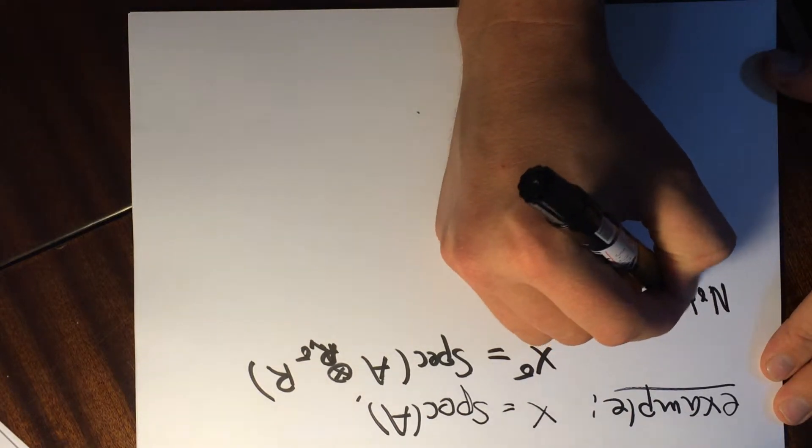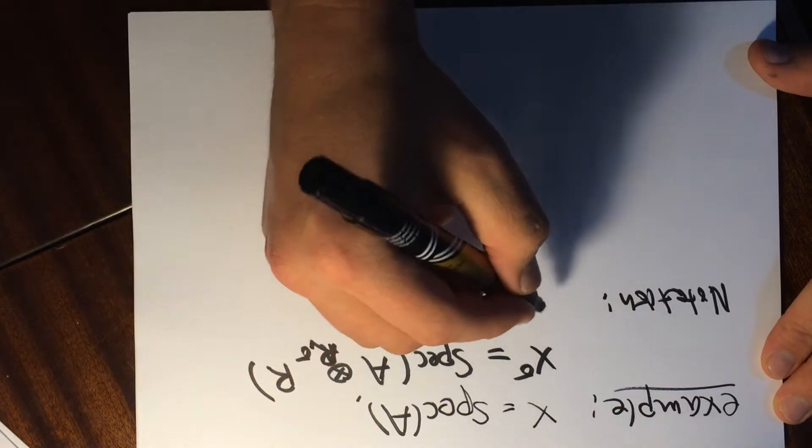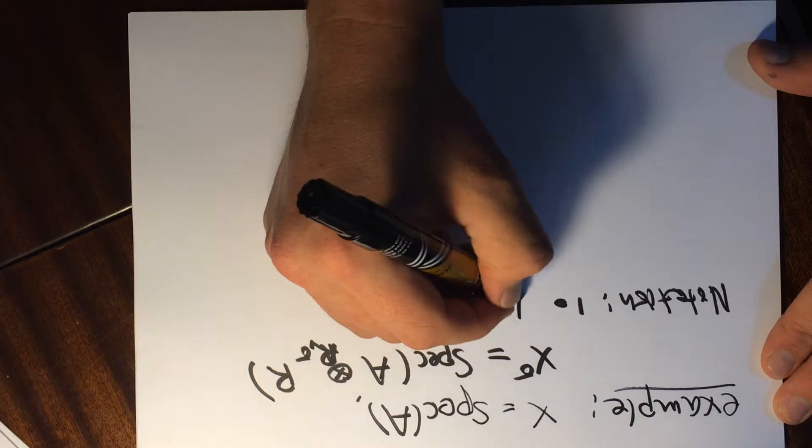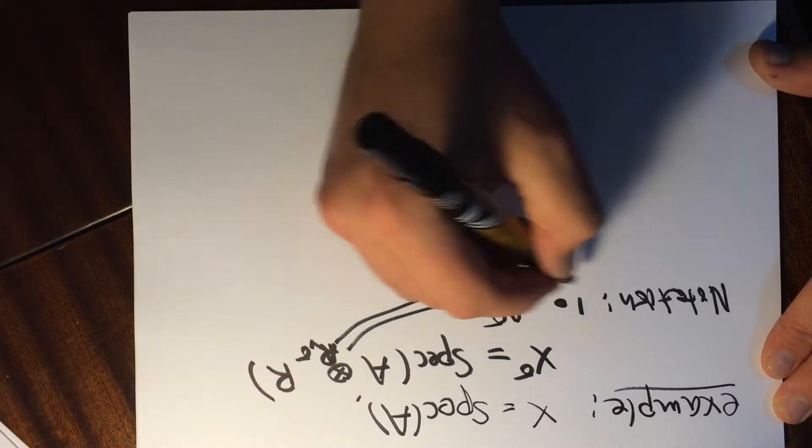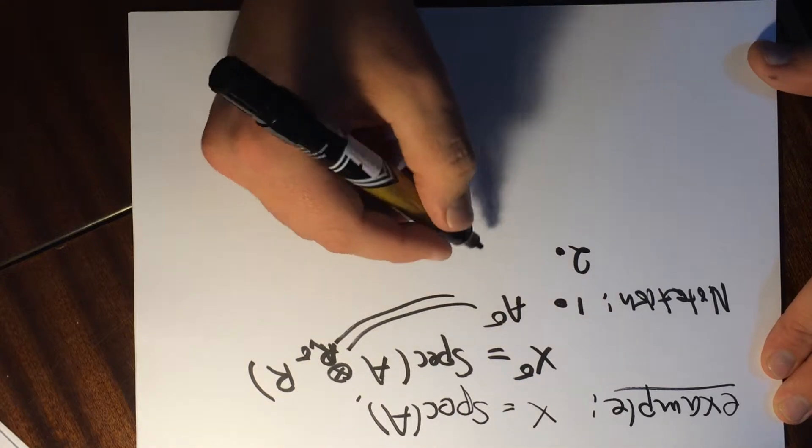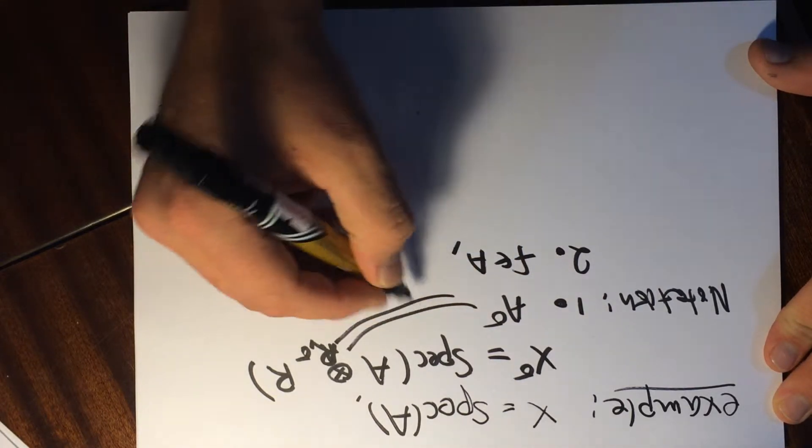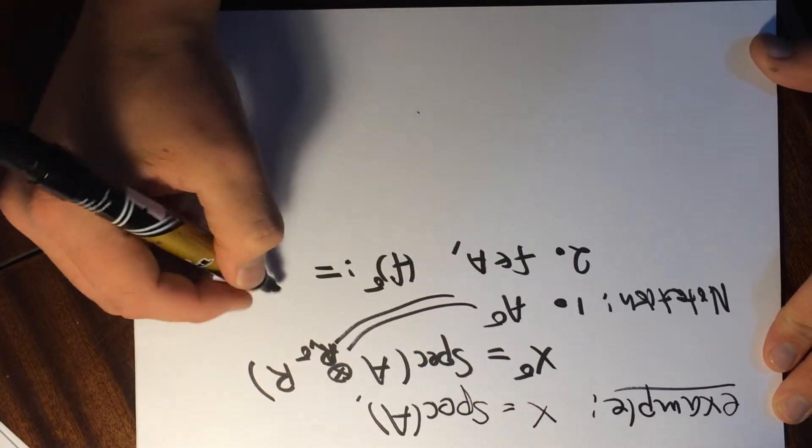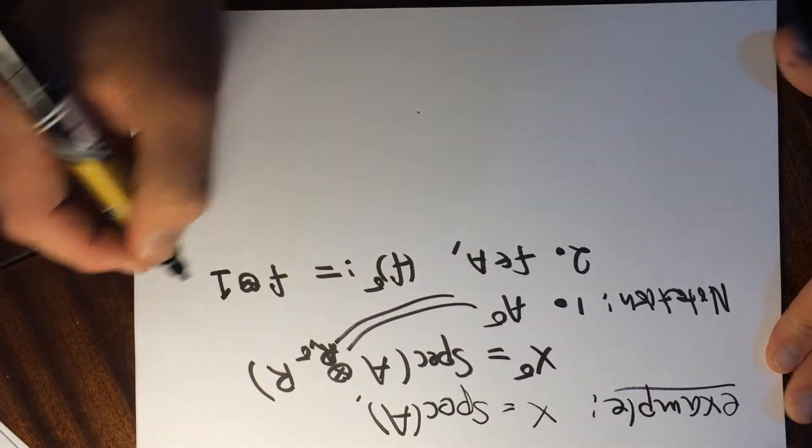So notation. Okay. So we'll let this thing here, so first notation bit is that A sigma will be defined to be equal to this thing. The second notation bit that I want to introduce is, I want to introduce a notation for F in A. I'm going to let F sigma, like this, be defined to be equal to F tensor with one.